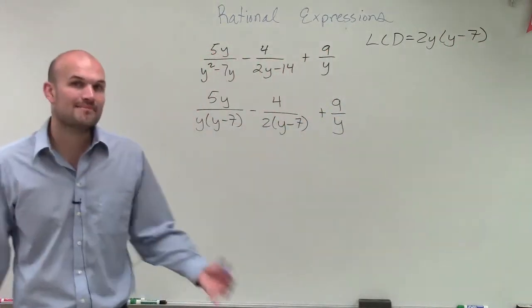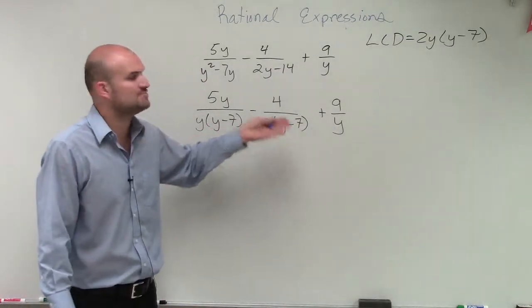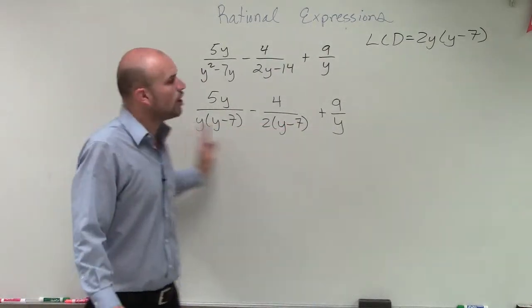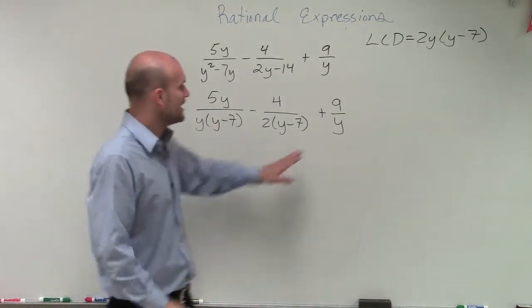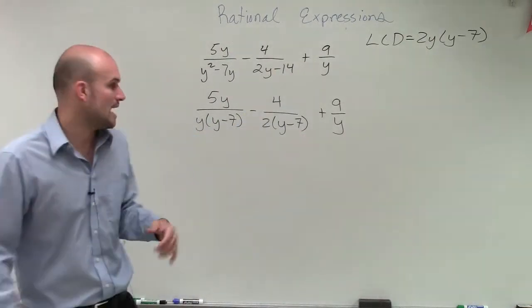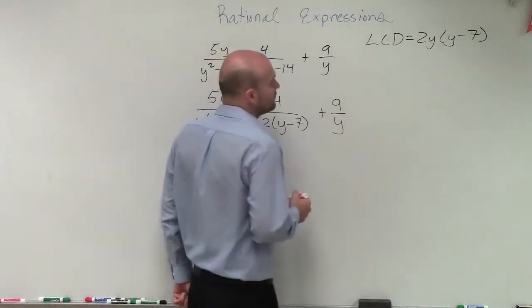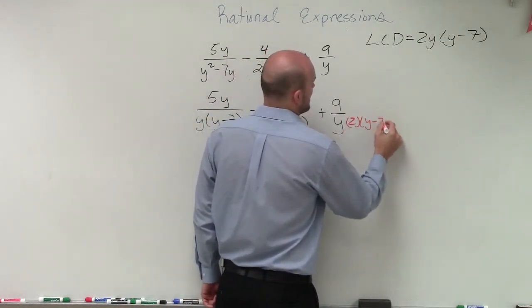If we can make that our least common denominator, that means every single one, all I need to do is multiply by some other terms for all of my denominators to share that value. So to get to that point, we need to look at each denominator and see, what do I need to multiply by to get my least common denominator? So here, I only have a y, so I need to multiply by 2 and y minus 7.